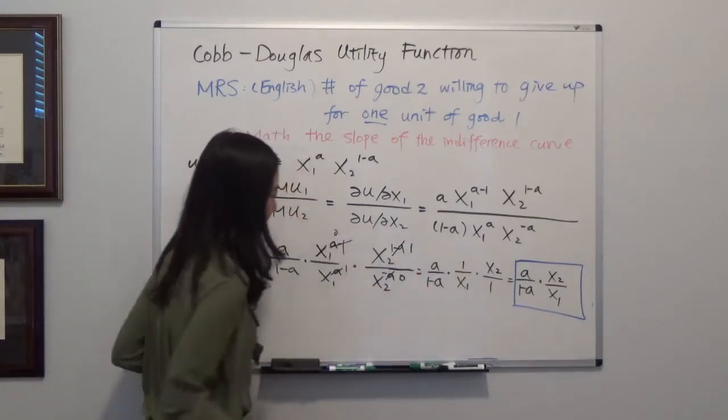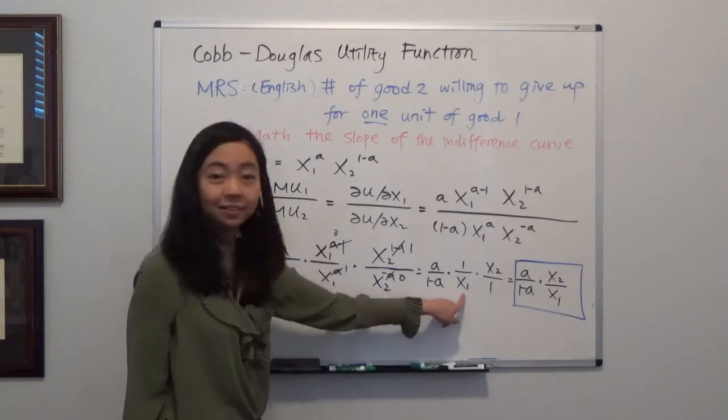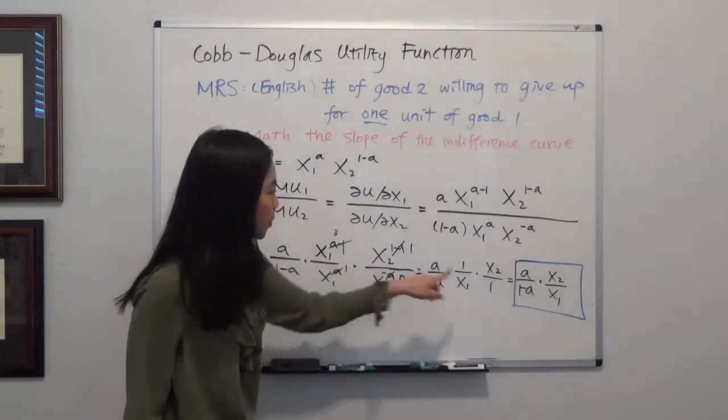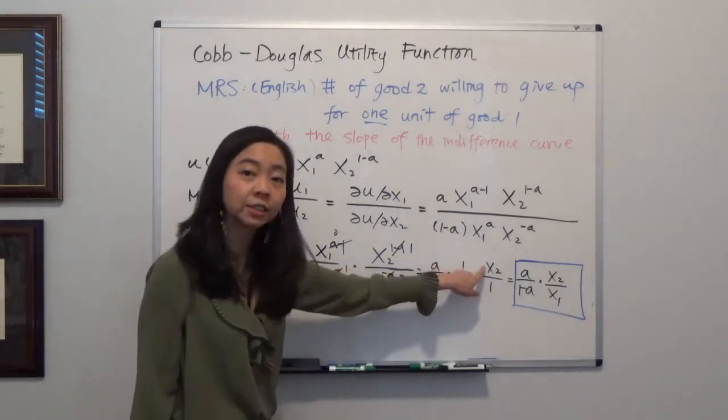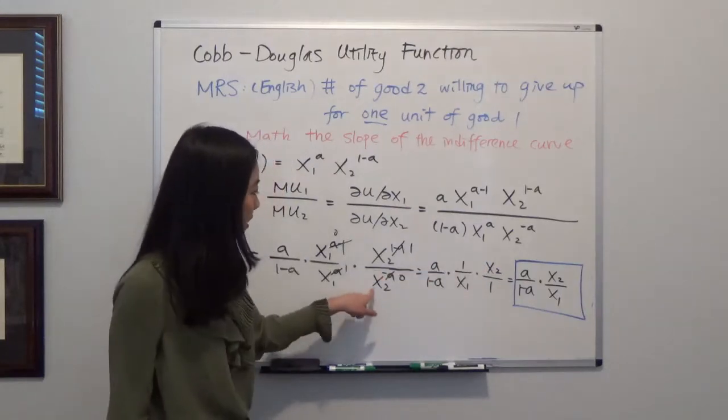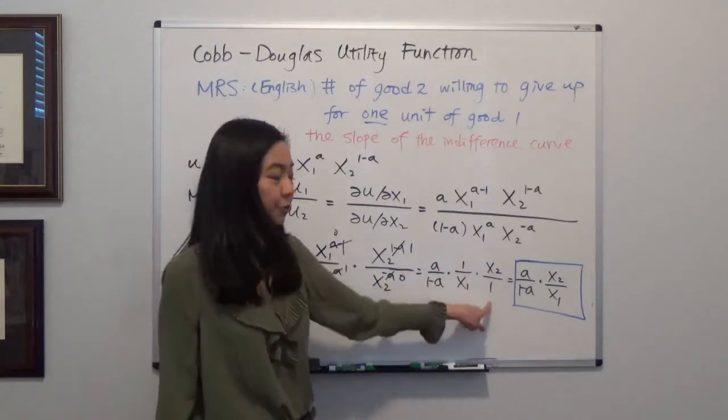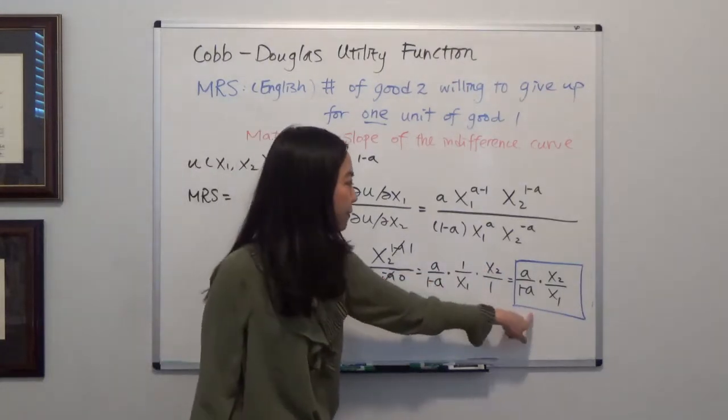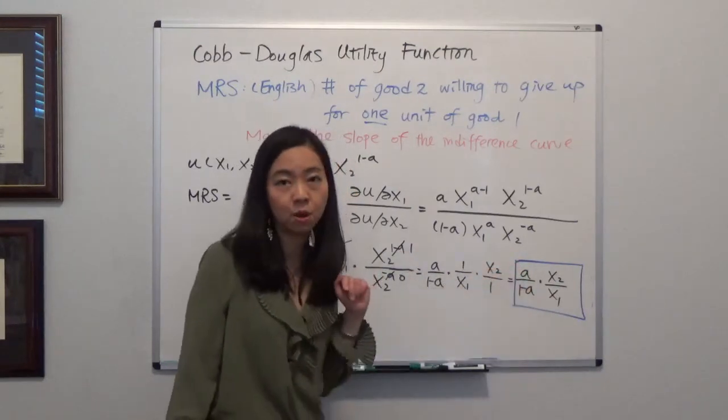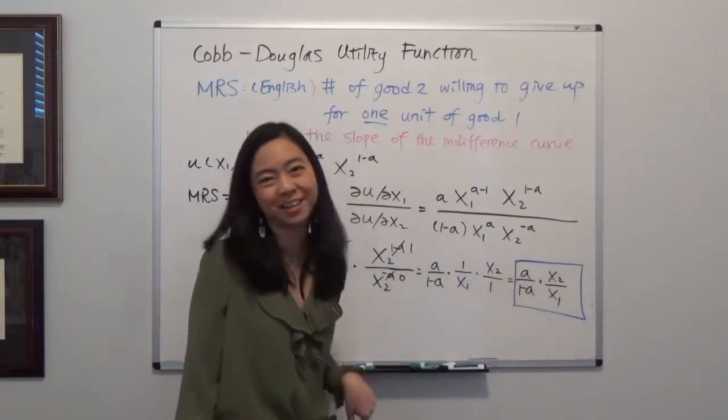Upstairs that turns to one. Downstairs you have x1 and here you have upstairs you have x2 and downstairs you have x2 to the zero's power. So that's one. And you can simplify that to a divided by one minus a times x2 over x1.